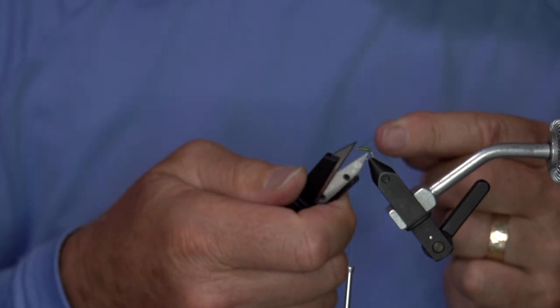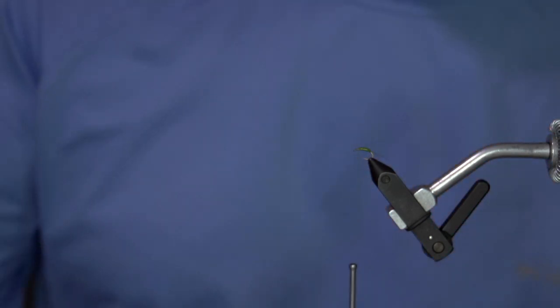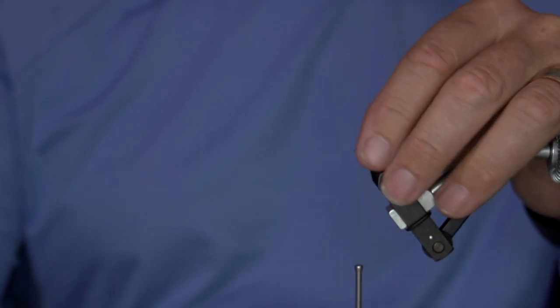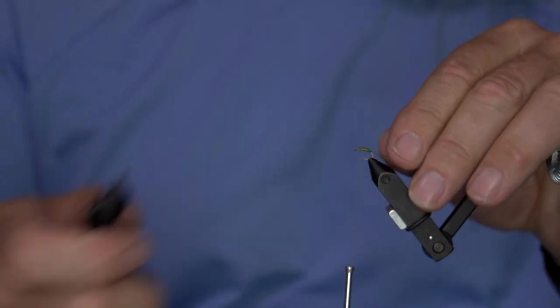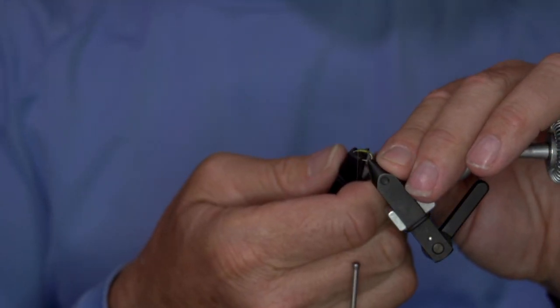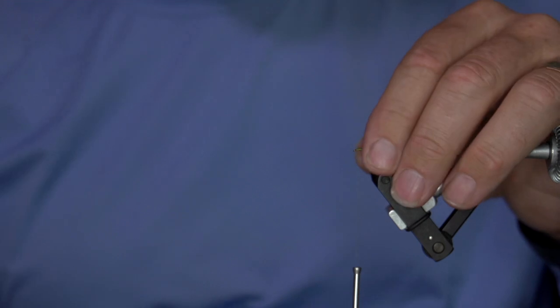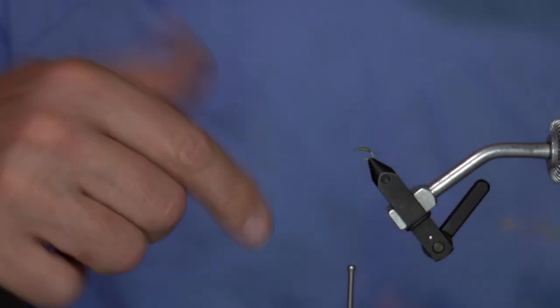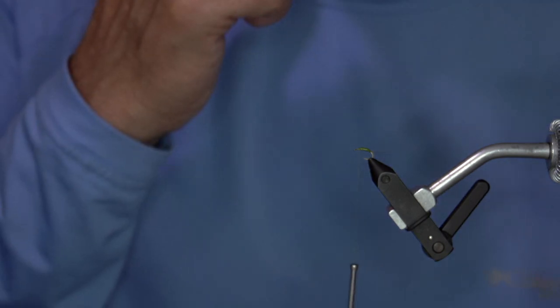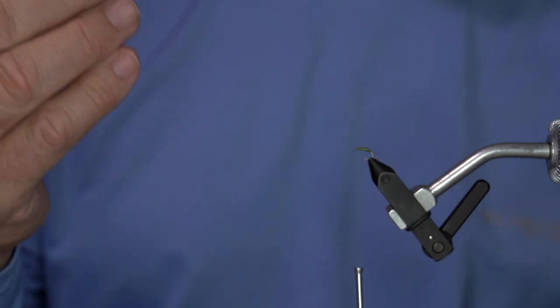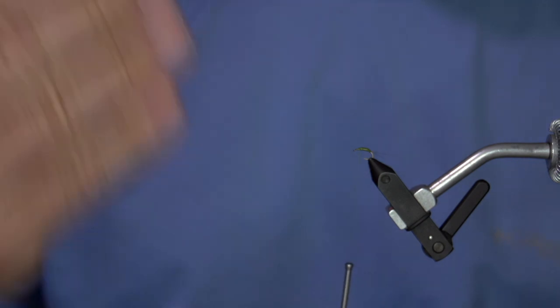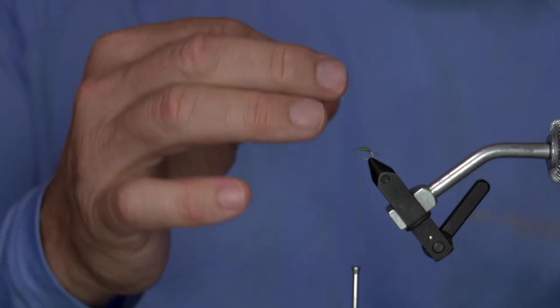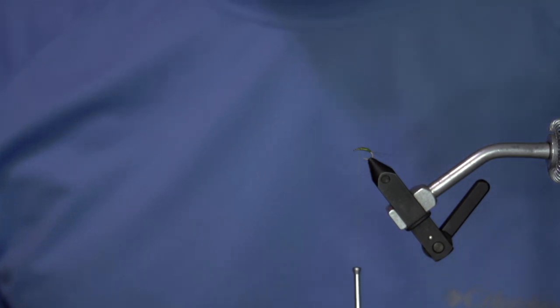And so normally when we tie dry flies, we want them to be super light so that they're right on top of that surface film. But these are emergers, so we want them to penetrate the surface film. So that vinyl is nice because it's pretty clean and slick, so it'll go through that film. And it's a little bit heavier, so it'll also pop through that film.